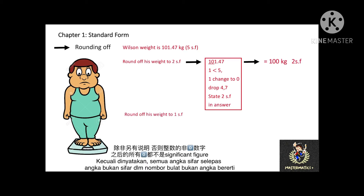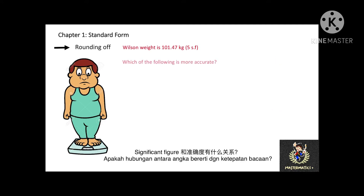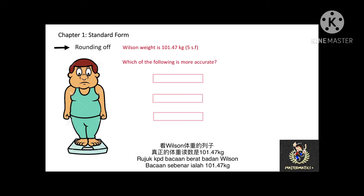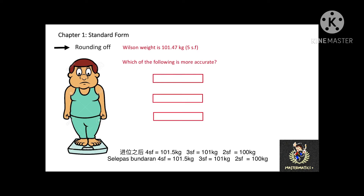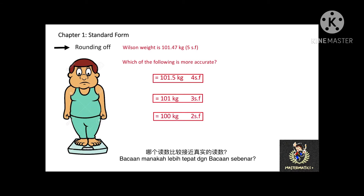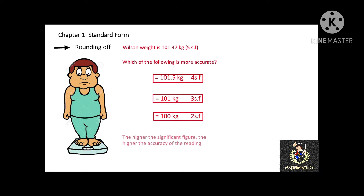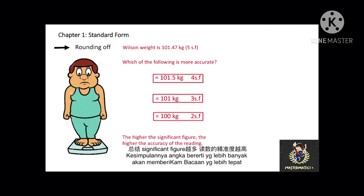But make sure you state 2 significant figures on the first answer and 1 significant figure on the second answer, because all zeros after any non-zero digit in a whole number are not significant unless stated otherwise. Therefore, you must state the number of significant figures in your answer. What is the relationship between significant figures and the accuracy of the reading? The higher the significant figures, the higher the accuracy of the reading.